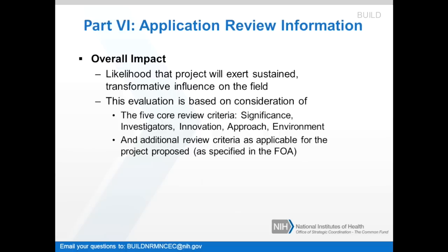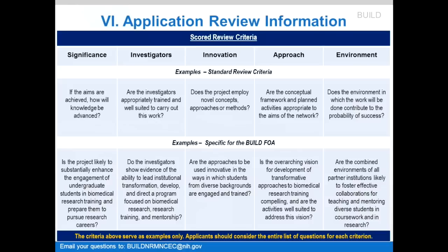This evaluation is based on consideration of the five core review criteria: significance, investigators, innovation, approach, and environment. There are also additional review criteria as applicable for the project proposed, and they are specified in the FOA. This table gives examples of the kinds of information that should be provided for each of the five core criteria. Note that there are examples for standard review and examples that are specific for the BUILD funding opportunity announcement. The five criteria are listed across the top: significance, investigators, innovation, approach, and environment. We will look at each of these specifically.